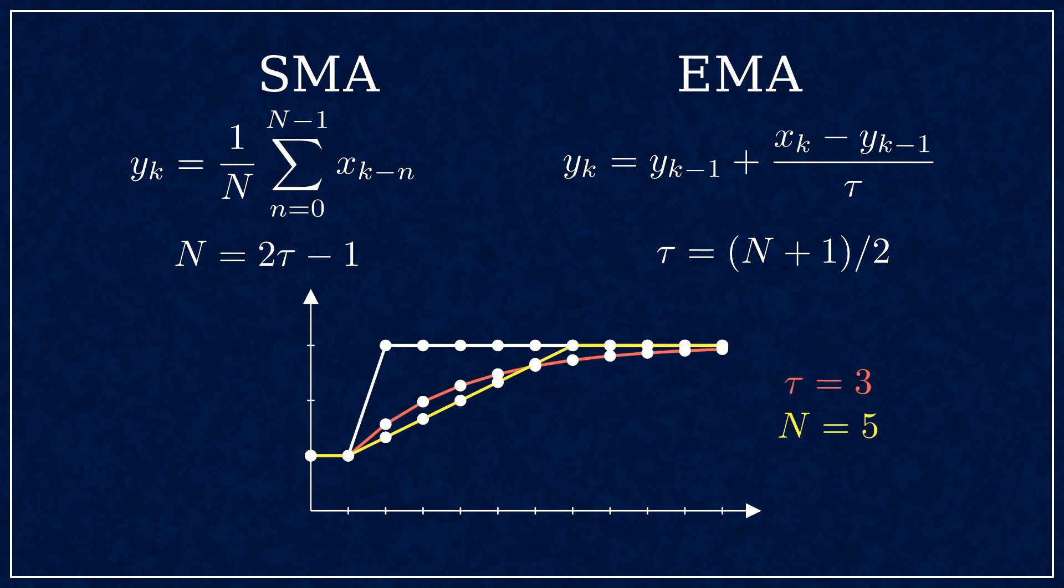Generally speaking, the SMA puts an equal weight on all samples in its window, resulting in a straight ramp transient. The EMA puts a little more weight on recent samples, initially it moves quicker. But then it has a much slower tail end.